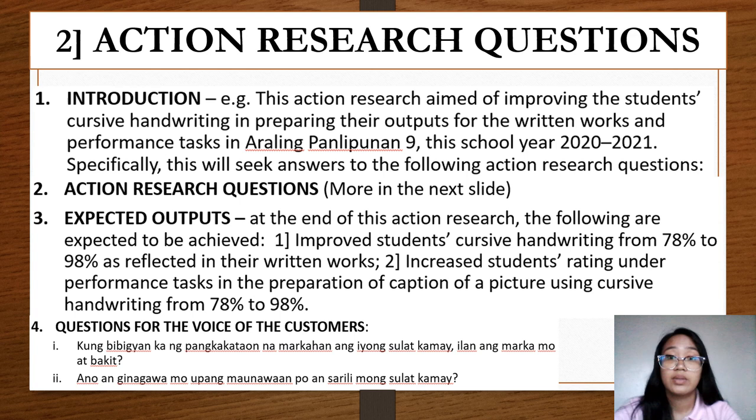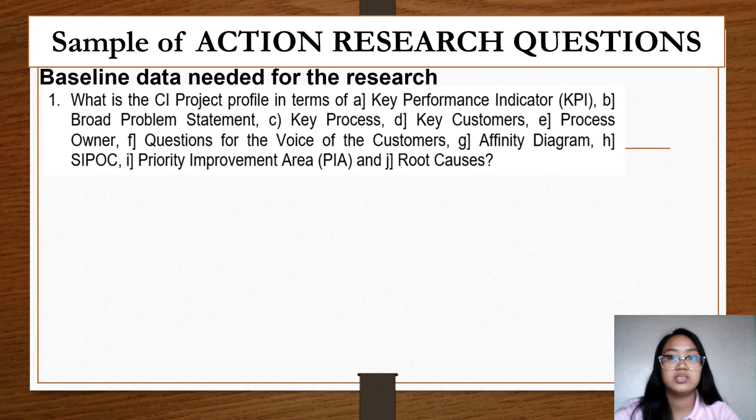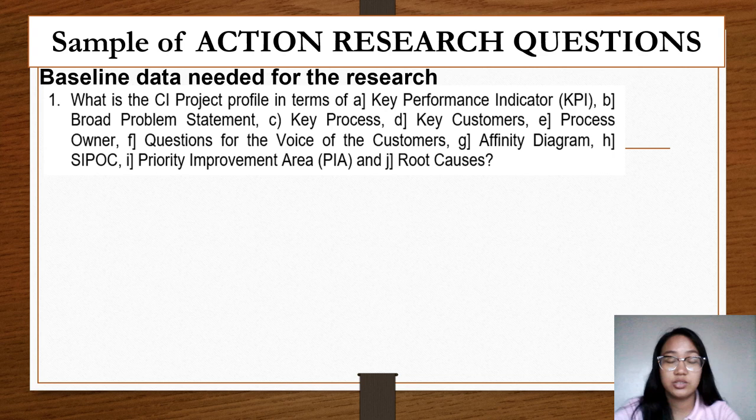An example of action research questions for the baseline data needed for the research uses the CI project profile, which includes the KPI, broad problem statement, key process, key customers, process owner, questions for the VOC, affinity diagram, cycle, priority, improvement area, and root causes. You may copy this particular question format in your action research proposal.